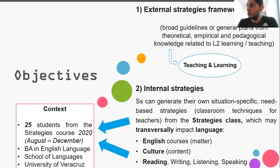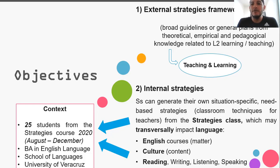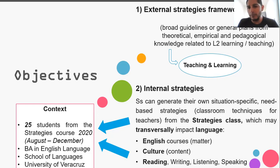What I tried to present is to merge both external strategies framework and internal strategies, so that the students can create their own situation-specific, need-based strategies and classroom techniques for teachers. Hopefully, the content, knowledge, and learning might impact transversally on language in different courses in the BA, such as English courses and culture courses, while developing the four skills of the language and sub-skills such as grammar and vocabulary.